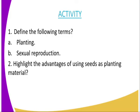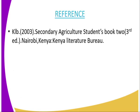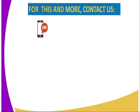That marks the end of today's lesson. I will leave you with some questions in the form of an assignment. Question number one: define the following terms — A, planting; B, sexual reproduction. Number three: highlight the advantages of using seeds as planting material. For reference, you can refer to the Secondary Agriculture Student Book 2. For more information or clarification, you can reach us through the following addresses: you can use SMS using the number displayed on screen.